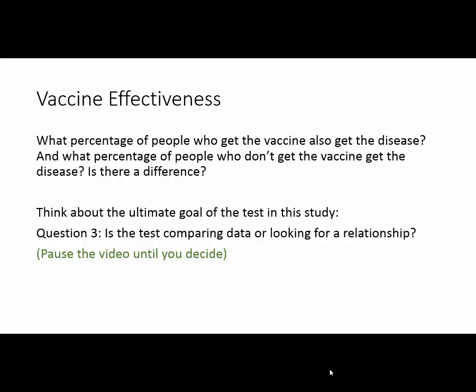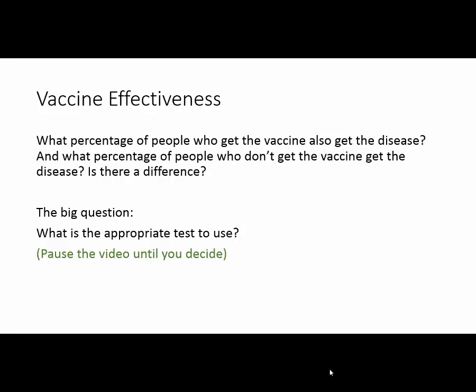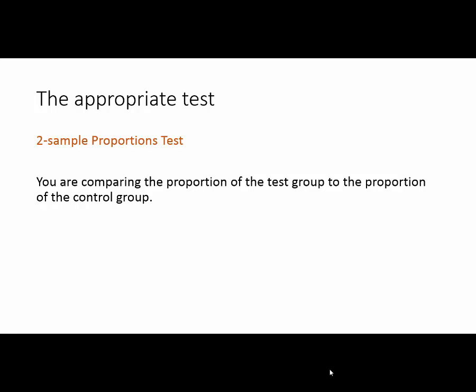Now, what is it that we're trying to do with this test? What's the ultimate goal of the statistical test we're using in this study? Is it to compare data, or is it to find a relationship between the sets of data? Pause the video, and when you've decided, move on. In this case, we are trying to compare our two sets of data to see if the proportion of people in the test group who got the disease is lower than the proportion of people in the control group who got the disease. We've answered those three questions and we're ready to answer the big question: what is the appropriate test to use? In this case, we are going to be using a two-sample proportions test — comparing the proportion of the test group who got the disease to the proportion of the control group who got the disease.